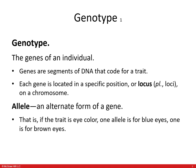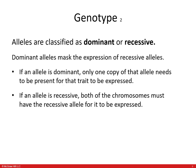For example, if there's a trait for eye color, you have one allele for blue eyes and one allele for brown eyes. At the end of the day, they are both alternative versions of the same gene that give rise to eye color — one for blue eyes and another for brown eyes. Alleles are classified as either dominant or recessive.